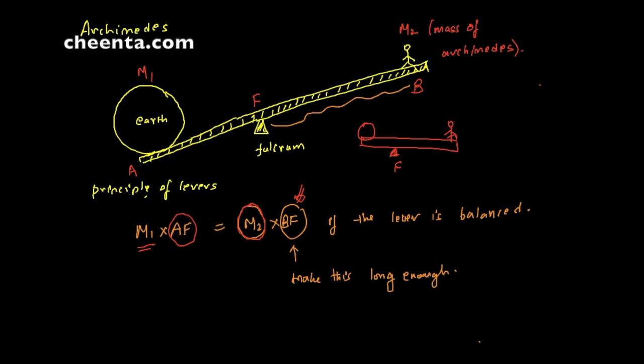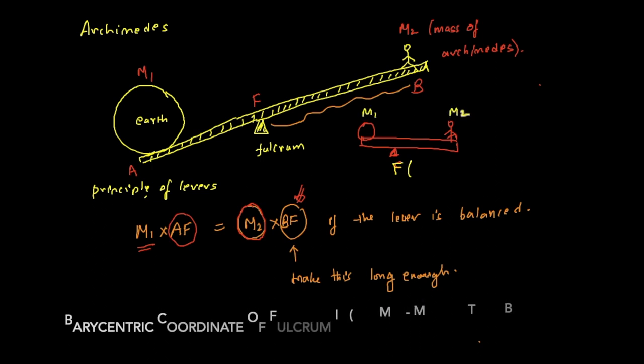Now with this principle in mind, we can actually talk about the first example of barycentric coordinates, and that is of the fulcrum. Suppose this mass is M1 and the mass of Archimedes is M2 as discussed earlier. Then the barycentric coordinate of F would be M1 comma M2 - that is the masses that would balance out the lever about this fulcrum.